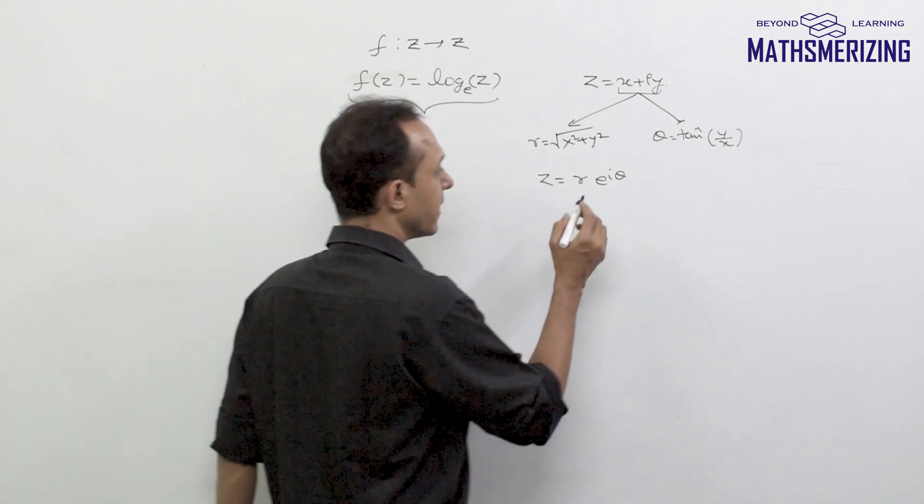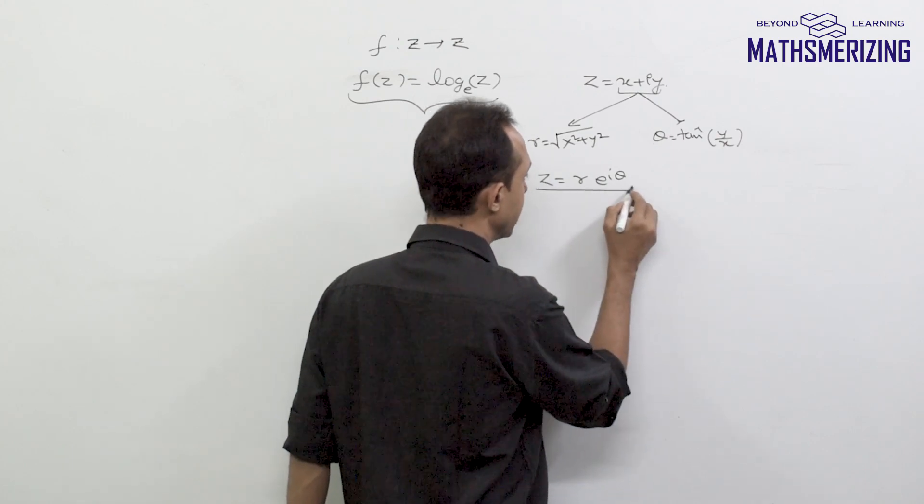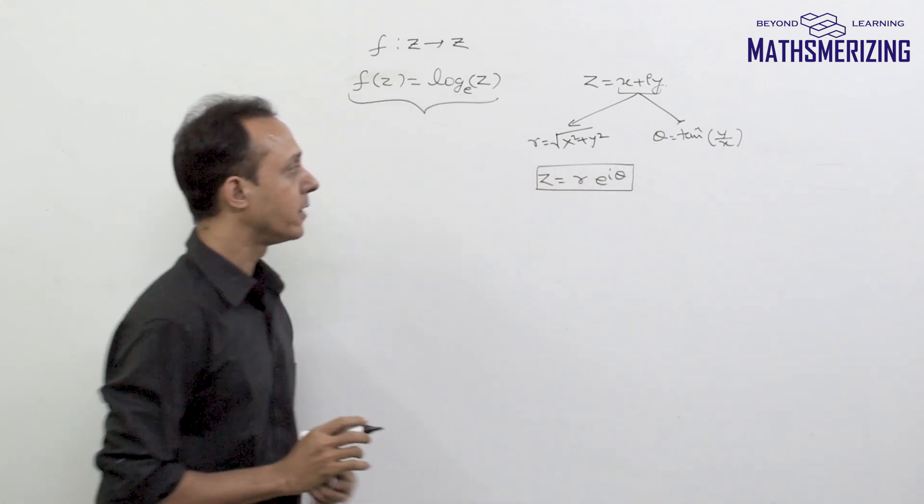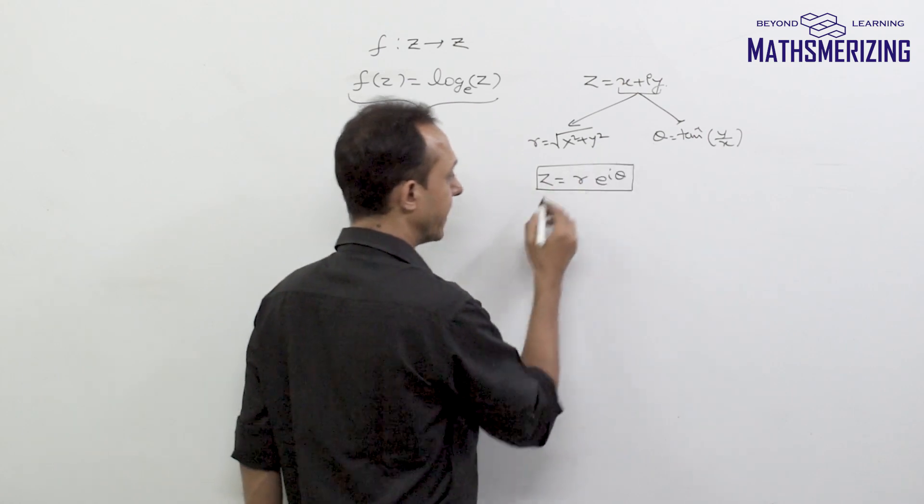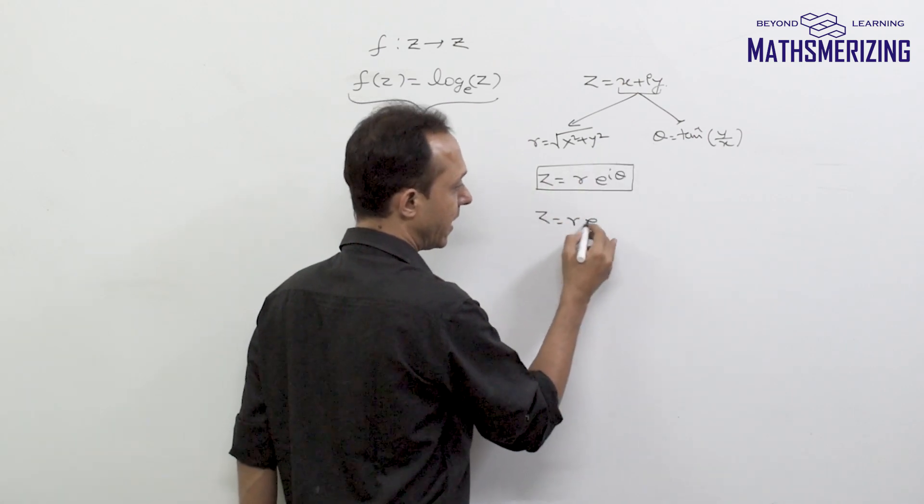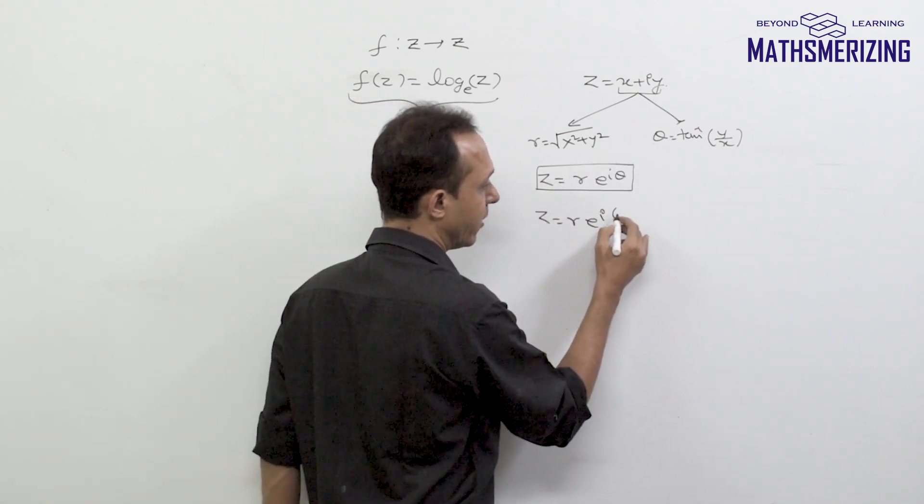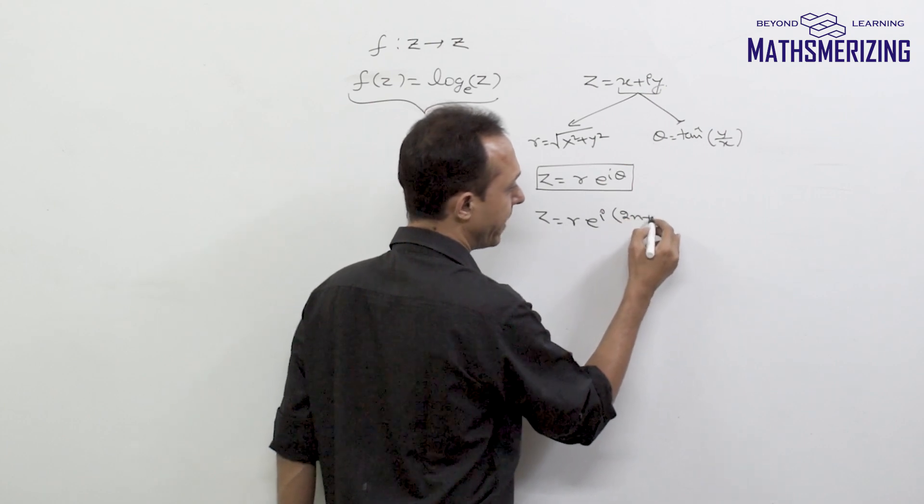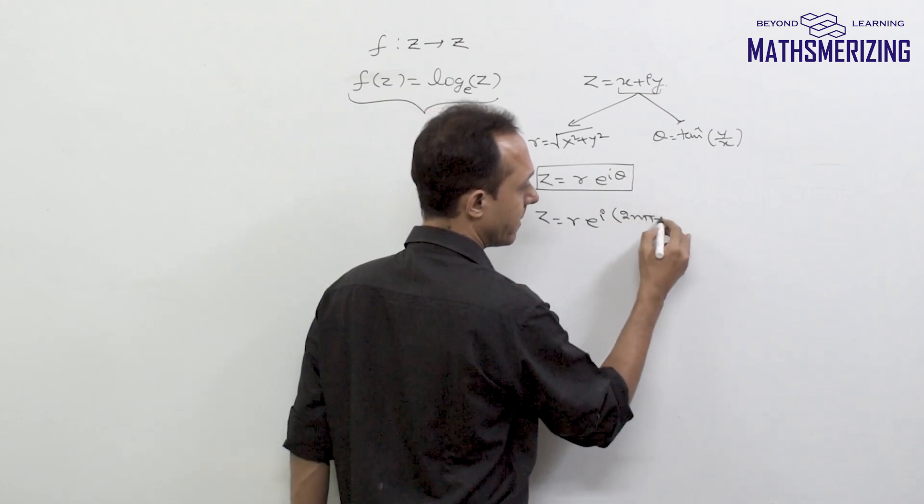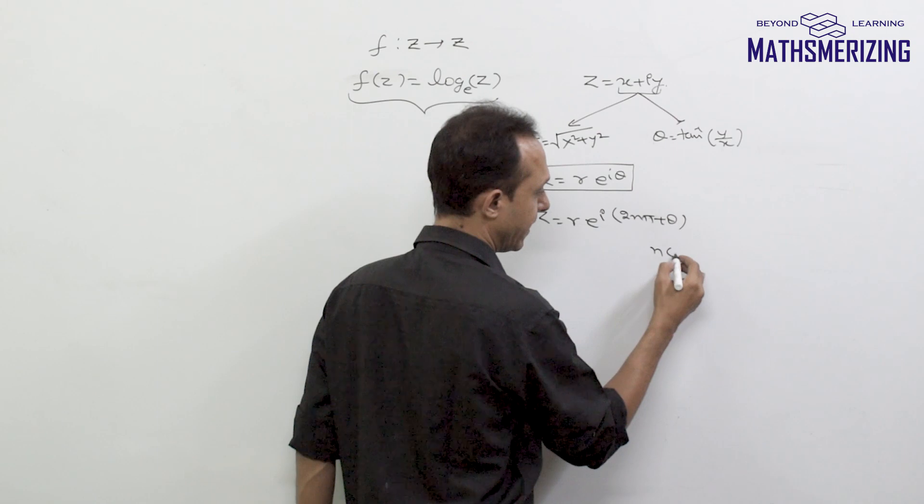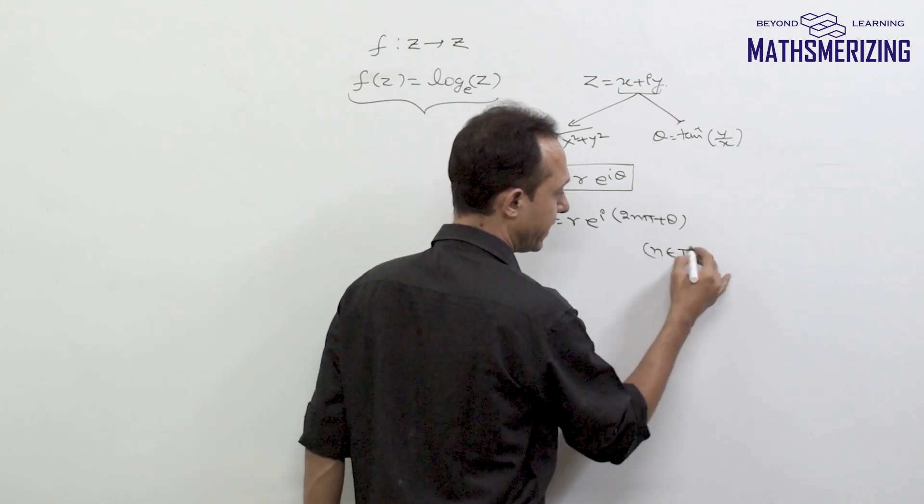So what we'll actually do is, rather than writing this complex number z as r into e to the power i*theta, we'll write z as r into e to the power i*(2n*pi + theta) where n belongs to set of integers.